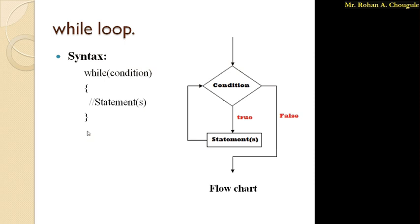Let's see how this while loop works with the help of a flowchart shown on the right side of the screen. Once your control enters into the while loop, before entering it checks the condition. That's why it is called an entry control loop — while loop and for loop are entry control loops. If the condition is true, control comes inside the while loop and executes the statements.